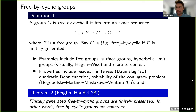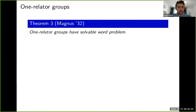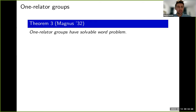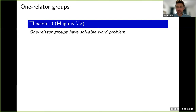The next item in the title is one-relator groups. Their study started almost 100 years ago when Magnus proved the Freiheitssatz. There are relatively few results known to hold for all one-relator groups. Magnus showed that all one-relator groups have soluble word problem, but other than this there are very few results which are known to hold for all one-relator groups. For example, it's not even known if the conjugacy problem is solvable for all one-relator groups, and the reason is that they can exhibit a wide variety of behaviors.